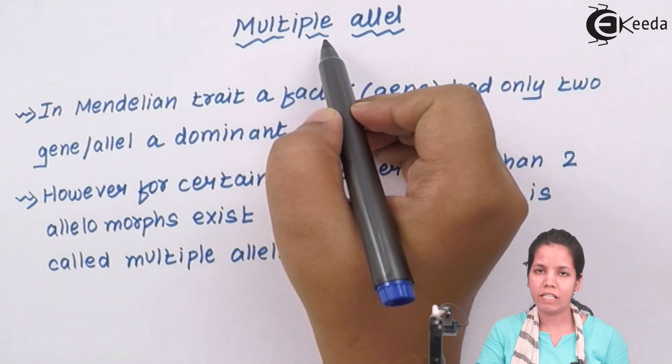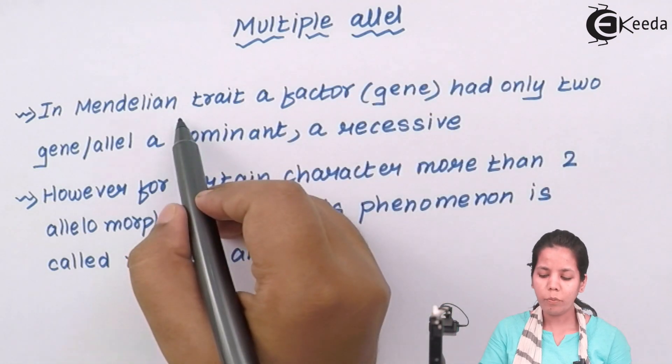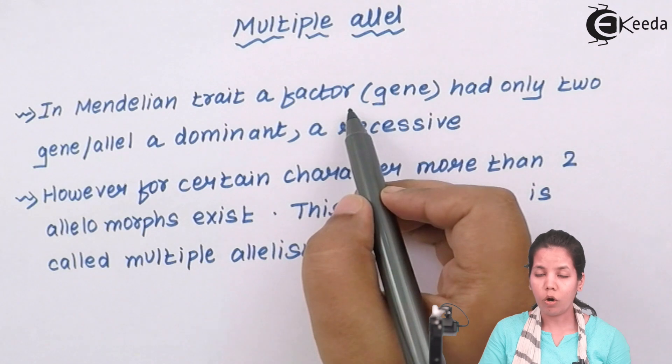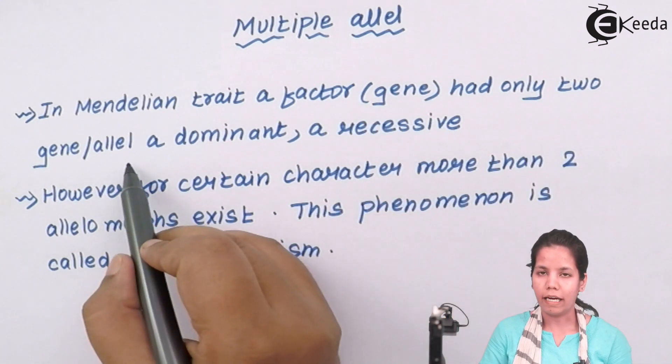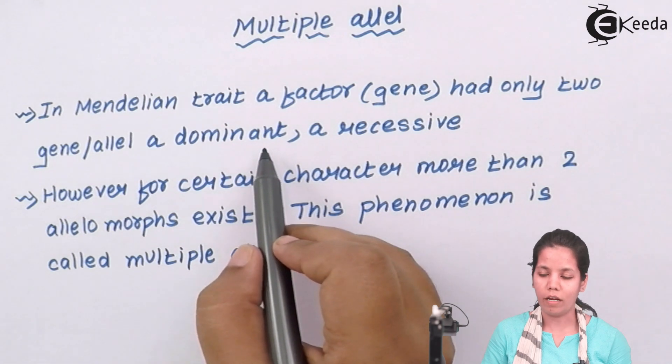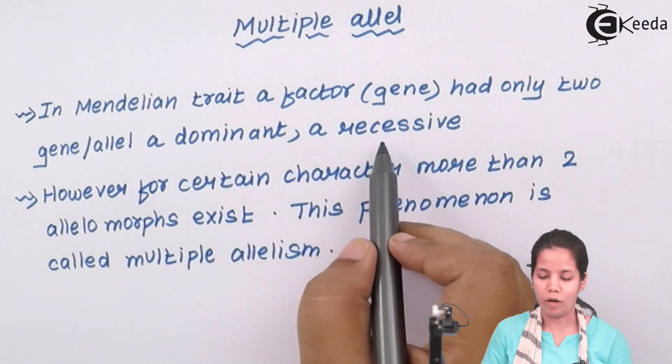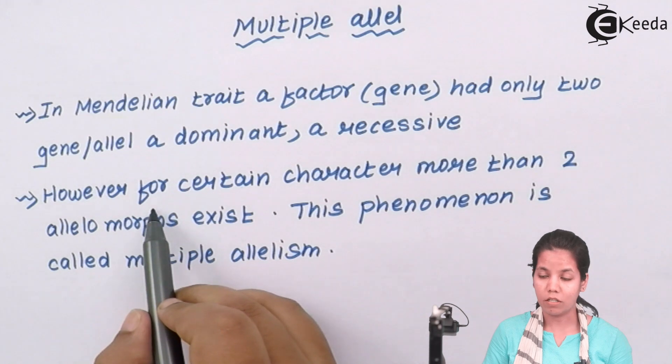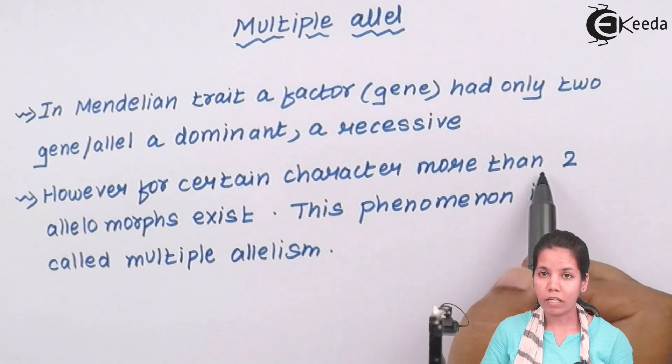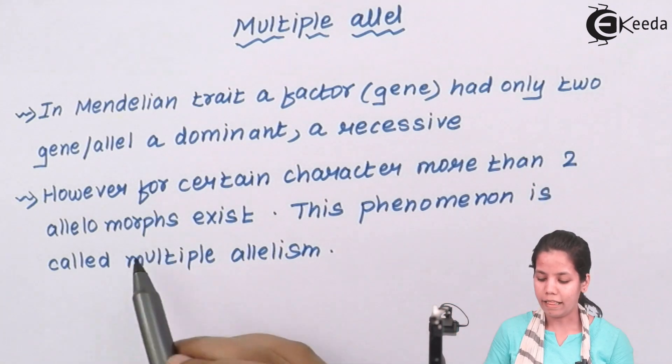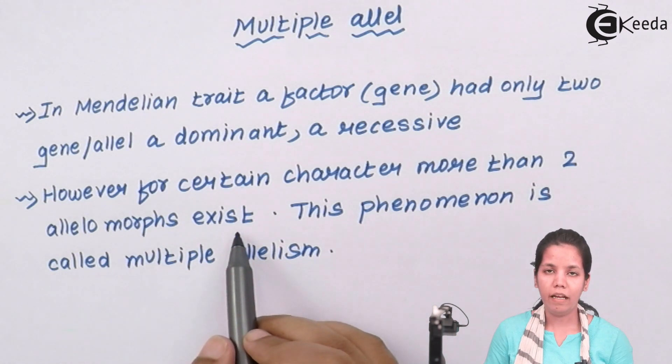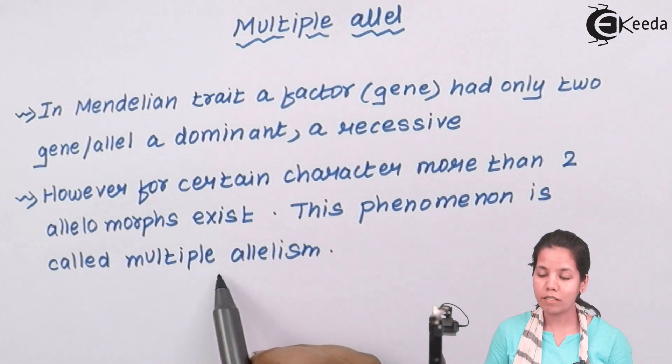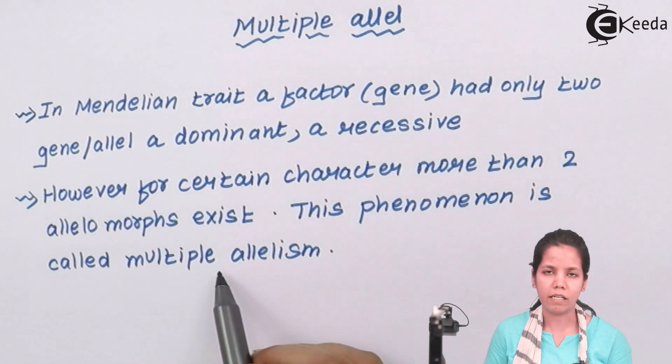Multiple alleles, or different sets of alleles. According to Mendelian trait, a gene or you can say a factor had only two alleles, that is one is the dominant one, the stronger one, and another one is the recessive one. However, certain characteristics or certain traits have more than two different forms of alleles, and these allelomorphs exist in various forms. An example of this is the human blood grouping system, and this is called multiple allelism or multiple alleles.